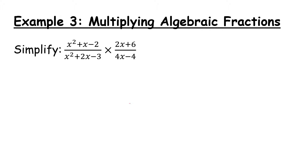The third example is multiplying algebraic fractions. To multiply fractions we multiply across the top and multiply across the bottom — there's no need for common denominators or any changes really. Although factorizing, where we can, can make our lives a little bit easier. Anywhere we can factorize we should, because that will help us see if there is any cancellation that can happen. I'm going to label the top line and the bottom line and deal with them separately.